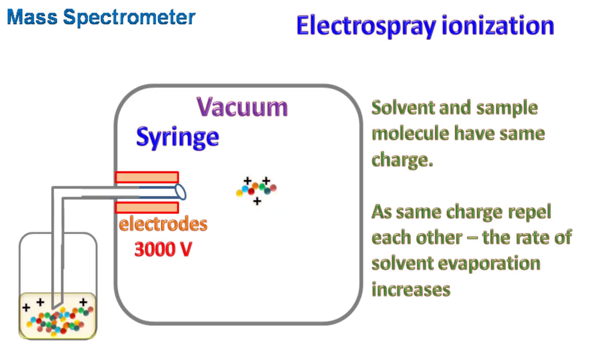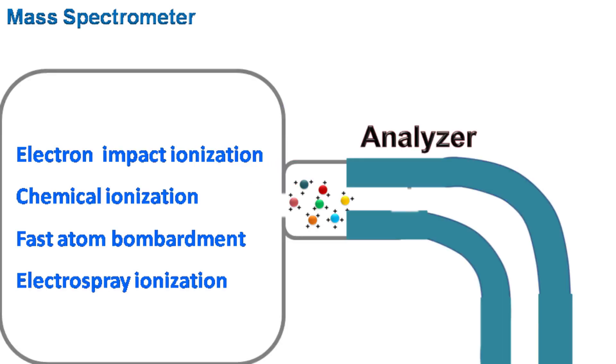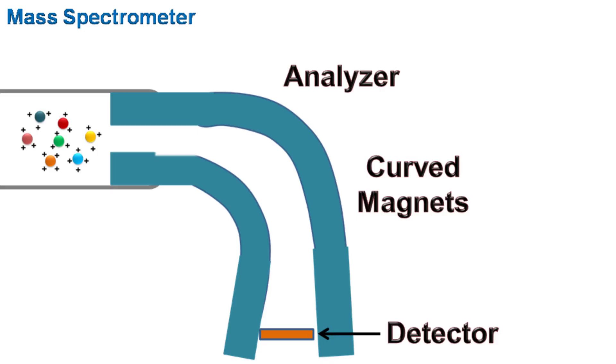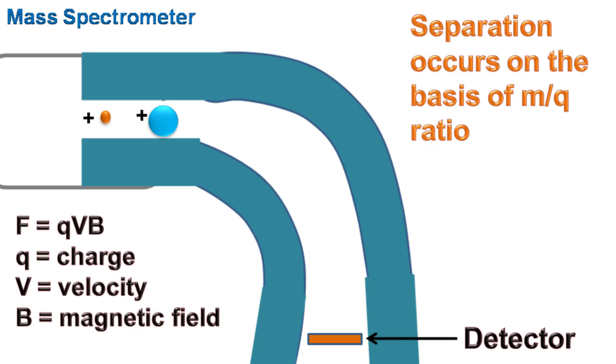Mass analyzer: The charged ions are allowed to pass through a curved magnet. The charged particles in the magnetic field experience a force that is given by F = qvB. The separation of ions occurs based on mass to charge ratio.